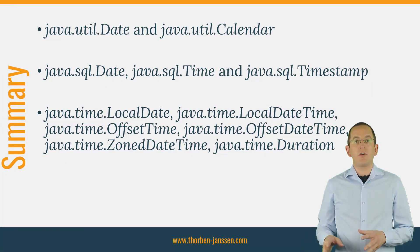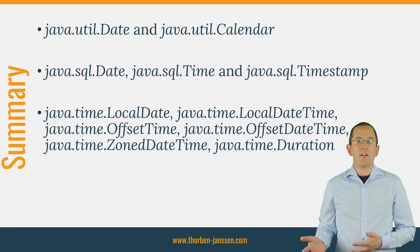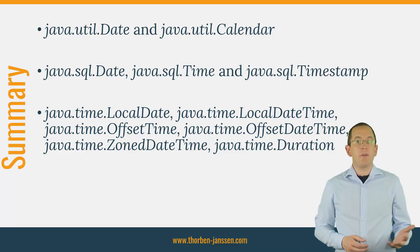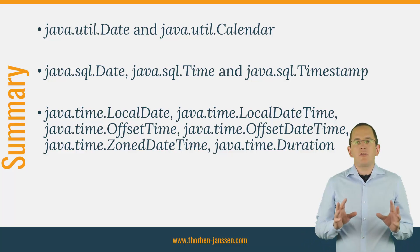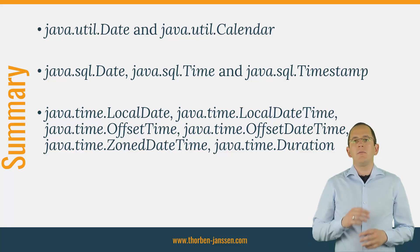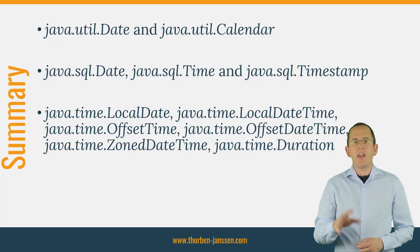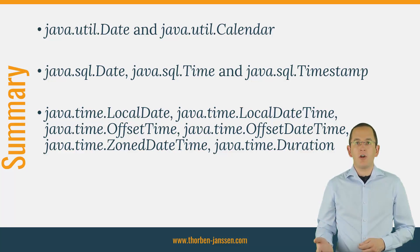In summary, you can map date and time database columns to java.util.Date and java.util.Calendar, java.sql.Date, java.sql.Time, java.sql.Timestamp, and the java.time classes including LocalDate, LocalDateTime, OffsetTime, OffsetDateTime, ZonedDateTime, and Duration. You just need to decide which Java type you want to use in your code. I recommend using the classes in the java.time package — they are part of the date and time API introduced in Java 8 and are a lot easier to use in your mapping and business code.